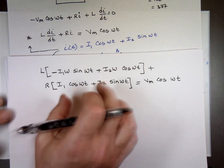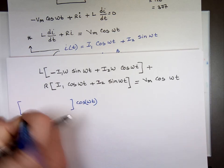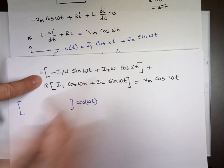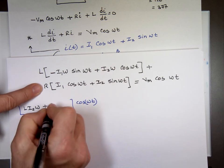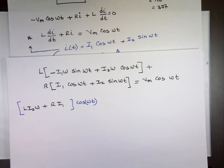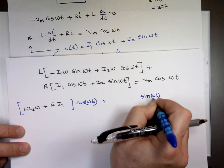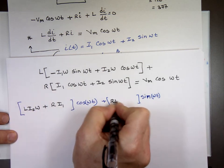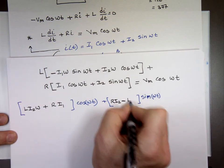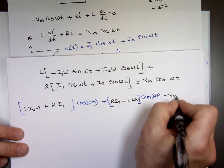All of that should equal Vm cos ωt. Now I can break it down to two parts. I'll take one part with the cosine of ωt, and in it I should be able to put this piece: L times I2·ω plus R times I sub 1. I'm collecting like terms. Can you see it? This times that plus this times this, that's the cosine. Let's look at the sine. The sine, what do we have? R times I sub 2 minus this one, L times I sub 1·ω.